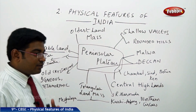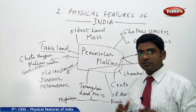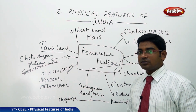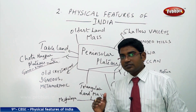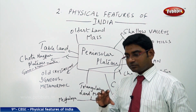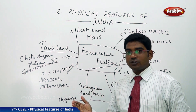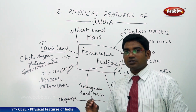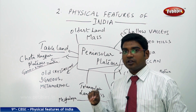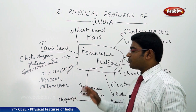Moving on to the formation of the Peninsular Plateau — it is an old crystalline rock surface formed because of igneous and metamorphic rocks. Igneous rocks are the initial stage rocks bursted out from volcanic activity, also called primary rocks. Later these rocks break down through reactions and processes to form sedimentary rocks, which are secondary rocks, and these sedimentary rocks go further to form metamorphic rocks.